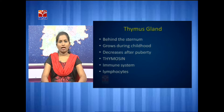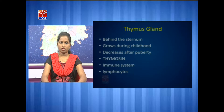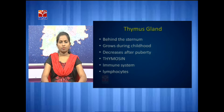The thymus gland is located behind the sternum in the region of the chest. It grows during childhood, but after reaching a certain stage — after puberty — it undergoes atrophy. The thymus gland secretes a hormone called thymosin. It is not only an endocrine gland but also a lymphatic organ, involved in the production of lymphocytes. It plays a vital role in the immune system by the maturation of T cells. The thymus gland contains cortex and medulla, where the cortex has undifferentiated T cells and the medulla has differentiated and matured T cells.